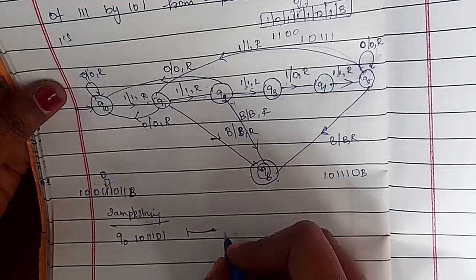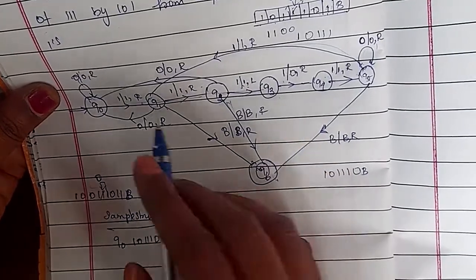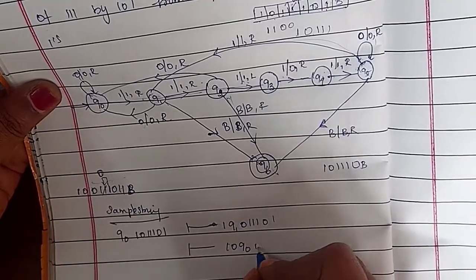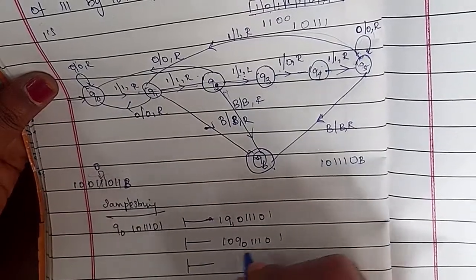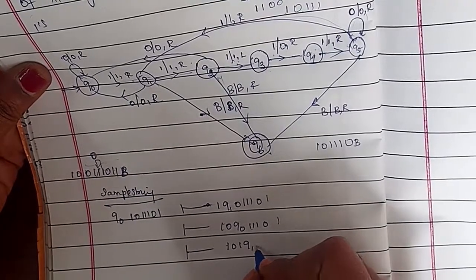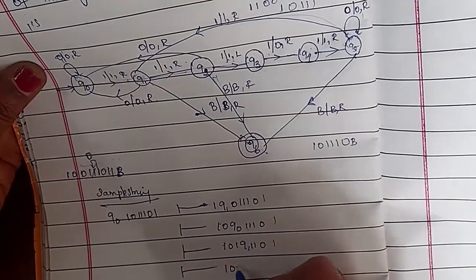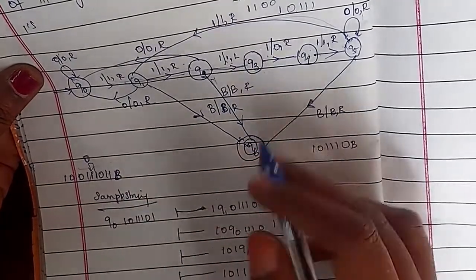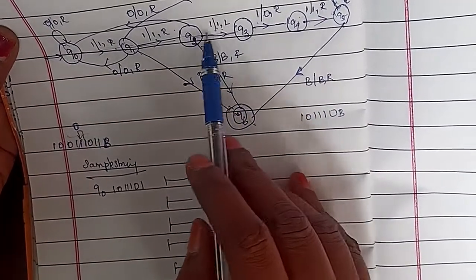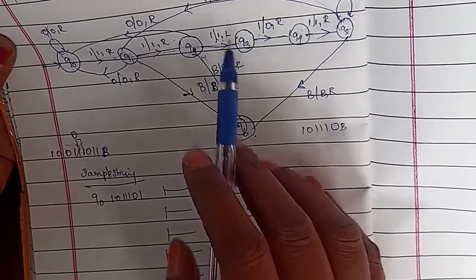Q0 on string one zero triple-one zero one: Q0 on one goes right to Q1. Then Q1 on zero goes backward to Q0. So: one zero Q0 triple-one zero one. Then Q0 on one moves to Q1 going right: one Q1 zero one zero one. Then Q1 on one moves to Q2: one zero Q2 one zero one. When you see this third one, you go to the left direction.